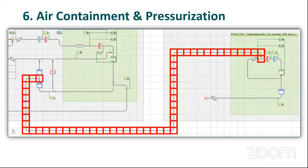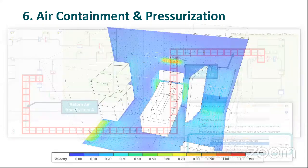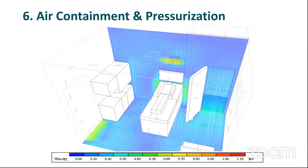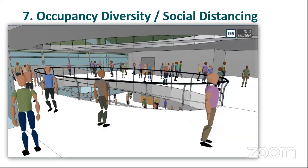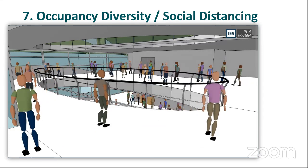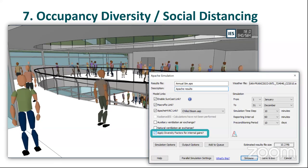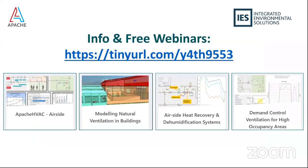Number six is air containment and pressurization. The principle is simple: you're moving dirty air from one system — a supplier — to another system. That could be 100% transfer air. This can also be analyzed for a CFD study in the space where you'll have air from a clean corridor, supply air in a space, extract at a bed head, exhaust in a restroom, and then transfer into that restroom. Number seven is occupancy diversity — typically used for egress and fire situations, but it can also be used for modeling social distancing, and impacts can also be seen for parallel performance. For any other information, please go to the IES website — there's a range of free webinars and a technical article there.